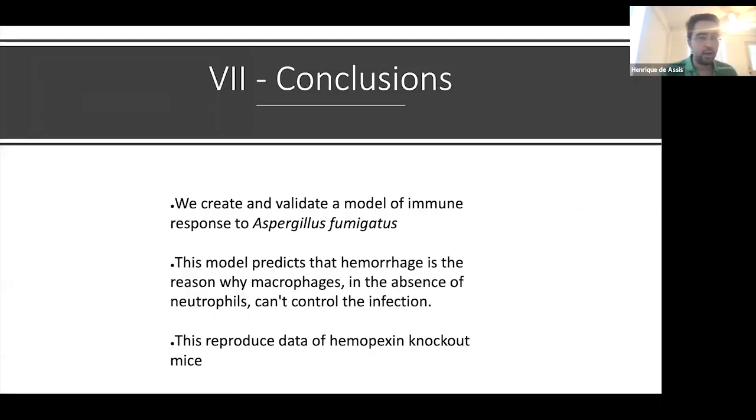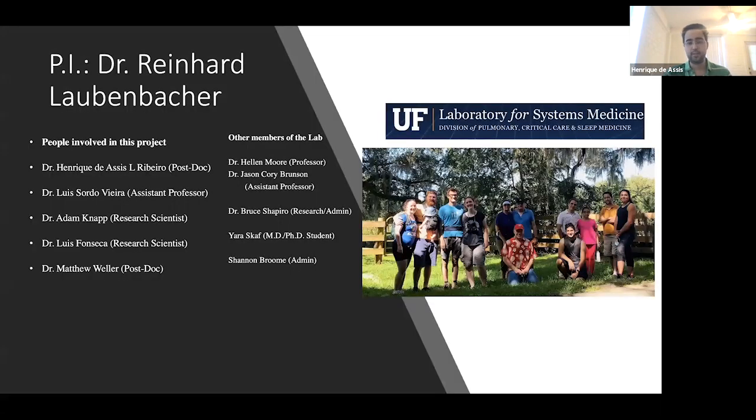So in conclusion, we created and validated a model of immune response to Aspergillus fumigatus. This model predicts that hemorrhage is the reason why macrophages in the absence of neutrophils can't control the infection, and it reproduced hemopexin knockout data of hemopexin knockout mice. These are the people involved in this project from the Laboratory of Systems Medicine: Dr. Luis Ordonez Vieira, Dr. Adam Knapp, Dr. Luis Fonseca, Dr. Matthew Wheeler. This is a not-so-up-to-date photo of the people in the lab. I would like to thank you for having me.